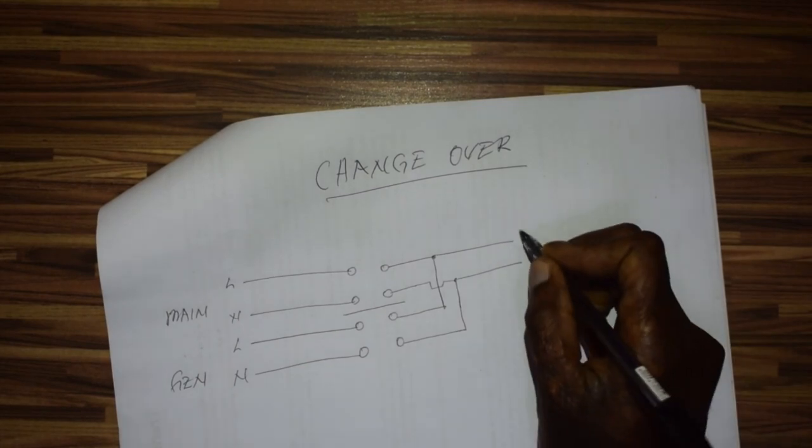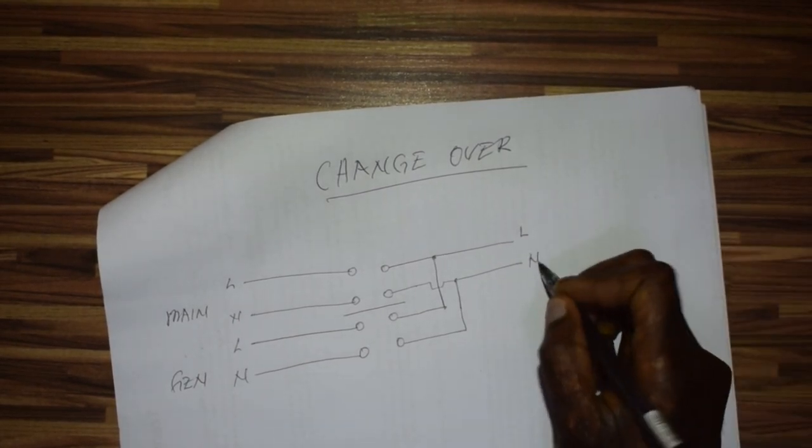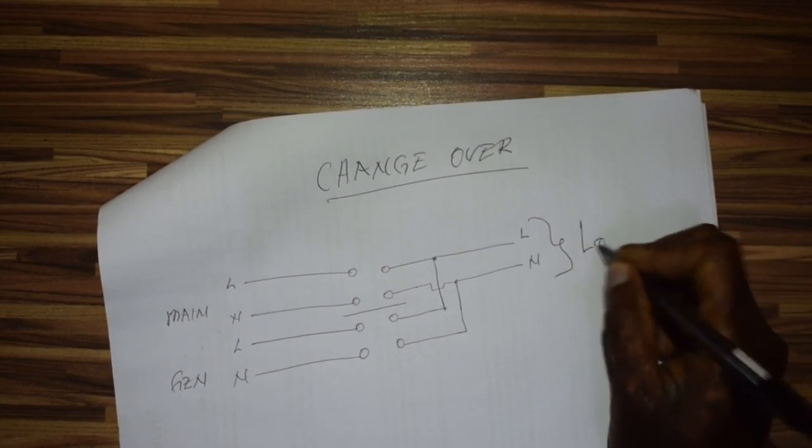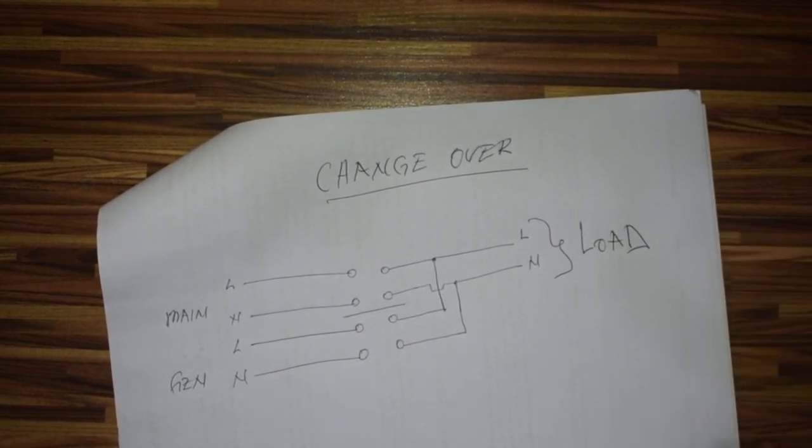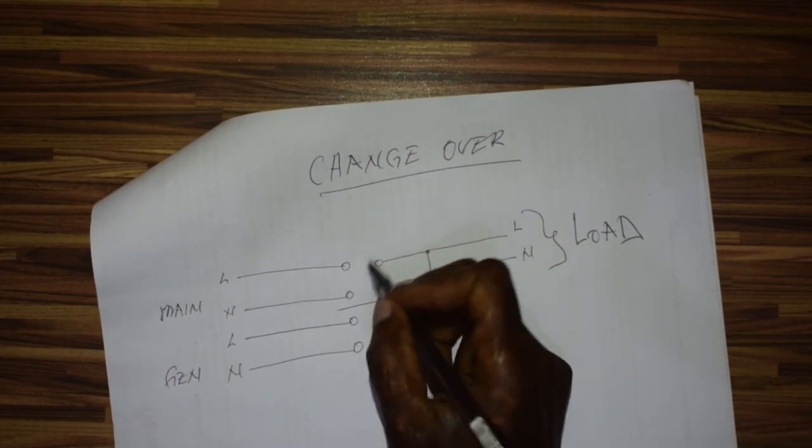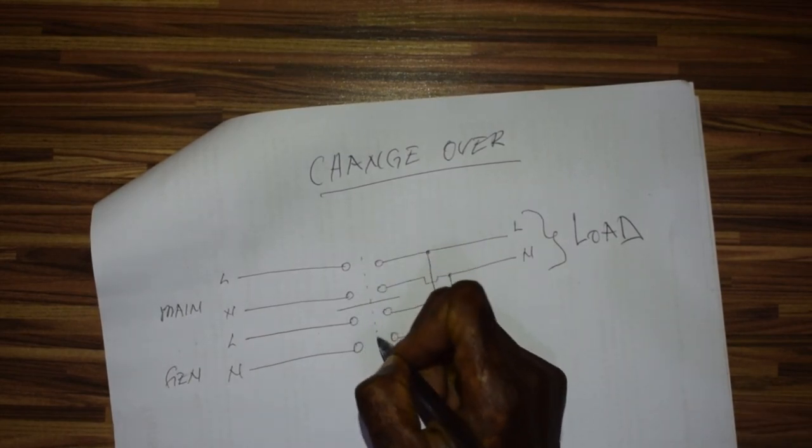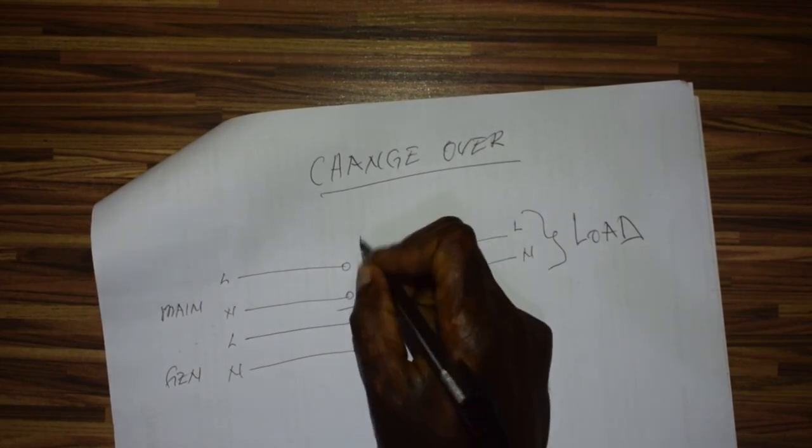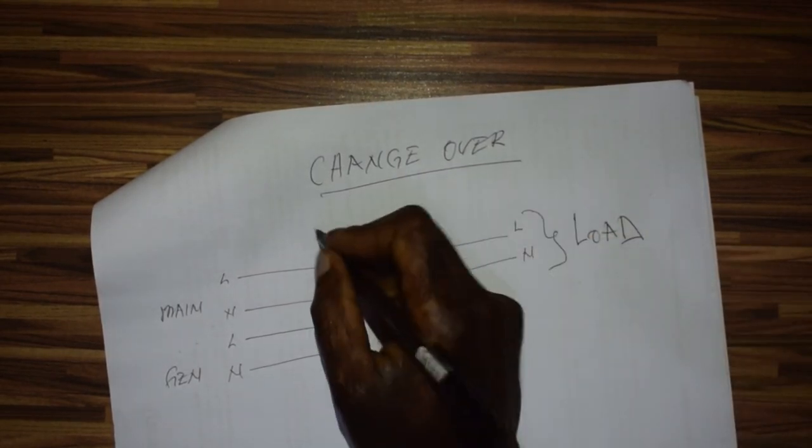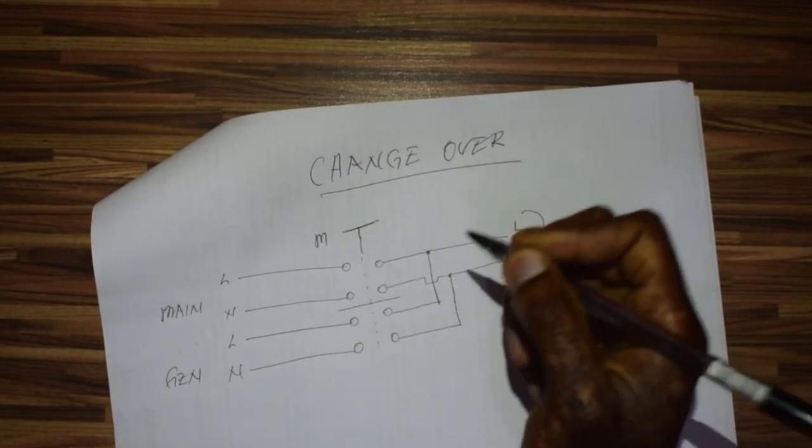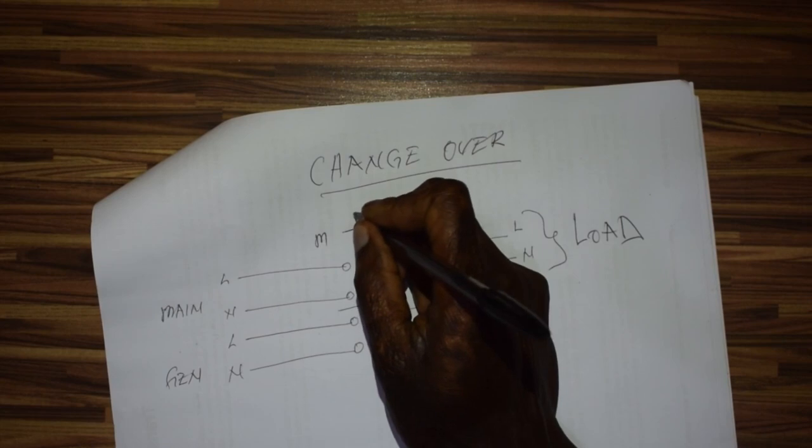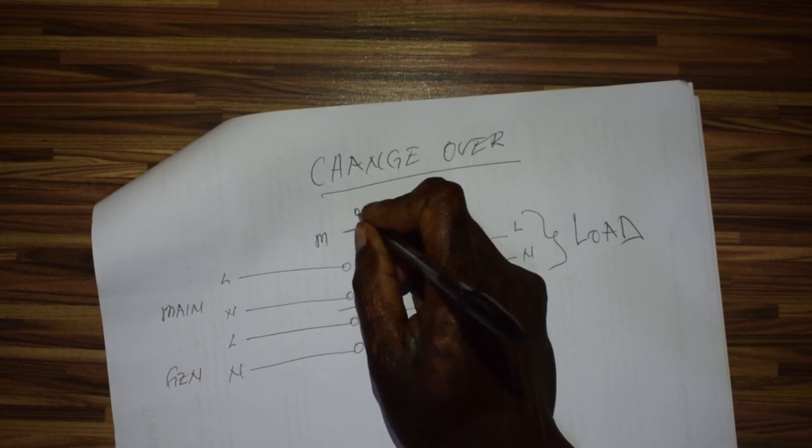I'll put this like a switch. Here we have M for main and G for backup. We put here 'off'.